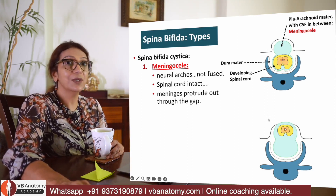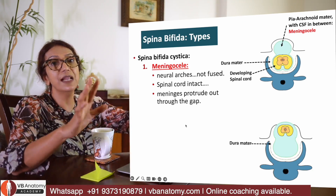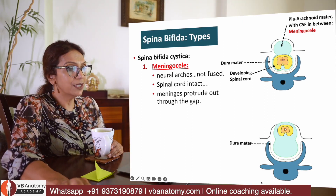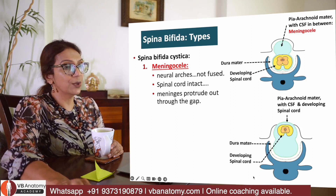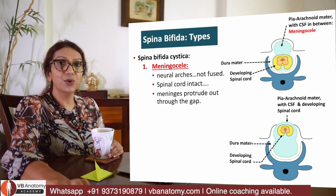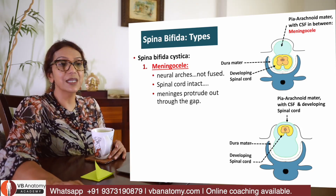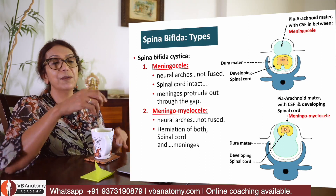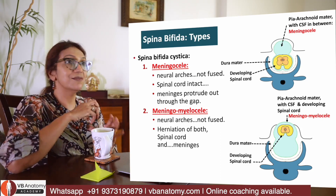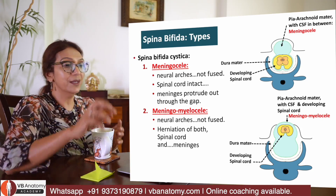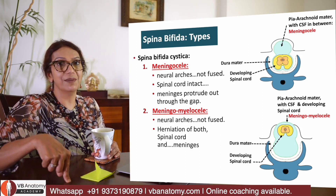A third condition, even worse, is when the spinal cord herniates out along with the meninges, resulting in development of something called myelomeningocele. This is very dangerous. There is also rachischisis — where the two sides of the neural tube, the neural groove, have remained a neural groove and never fused, so no neural tube formation occurred. There is very poor or no survival in these cases.